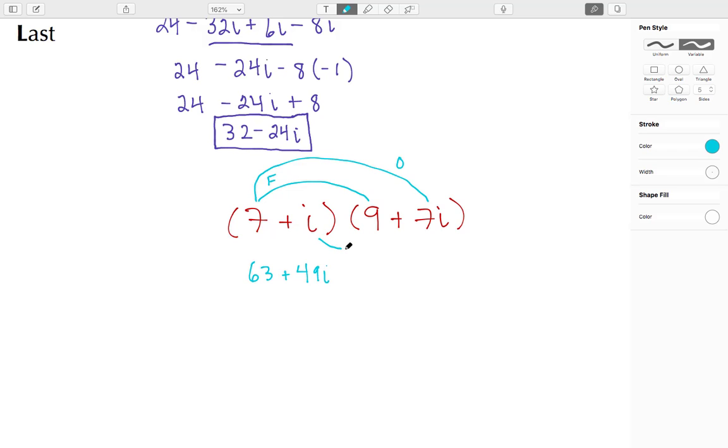I'm going to do Inner, which is going to be the i times 9 to give me a positive 9i. And then we're going to do Last, which is going to be i times 7i, so that's going to be a positive 7i squared.